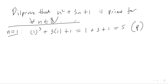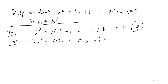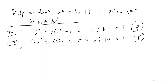We've not disproved the statement yet because n=1 gives a prime. Let's try n = 2. Note: the expression is n squared, not n cubed — apologies for that earlier. So 2² + 3×2 + 1 = 4 + 6 + 1 = 11, and 11 is a prime number.